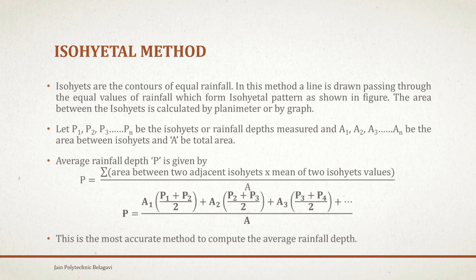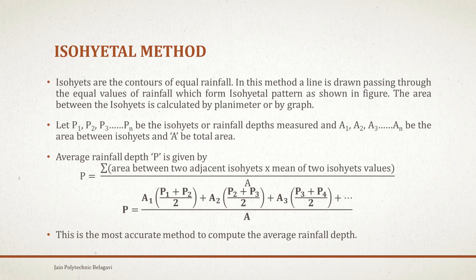The last method is the Isohyetal method. In this method, contours of equal rainfall are marked — a line is drawn passing through equal values of rainfall. Just like contour lines in surveying where you mark lines at equal heights or reduced levels, similarly here, lines of equal rainfall form the isohyetal pattern as shown in the figure, which I will show in the next coming videos.